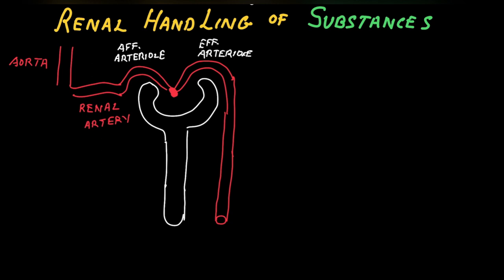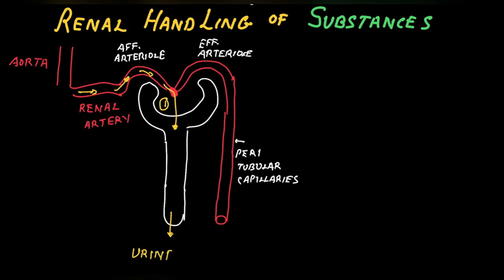These capillaries run along the side of the tubule and are known as peritubular capillaries. Blood comes from the aorta through the renal artery and its branches to the afferent arteriole, drains through the glomerular capillaries into the Bowman's space, and then throughout the tubular part to form urine.